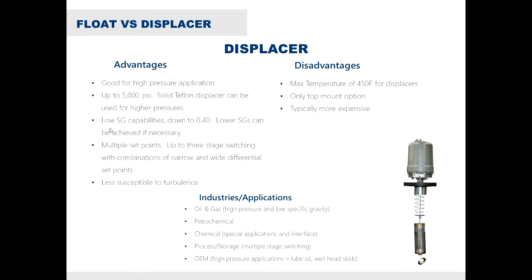Displacers are also less susceptible to turbulence. The biggest disadvantage with displacers is going to be temperature. Anything above 450 degrees requires using a float, because the spring used on a displacer-based level switch is not good for temperatures above 450 degrees — springs actually lose their spring force at higher temperatures. Essentially, if that spring force is lost, you lose the capabilities of the level switch. The other disadvantage is the only top mount option, and displacer-type level switches are typically more expensive than float-based switches.